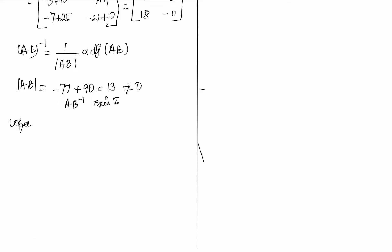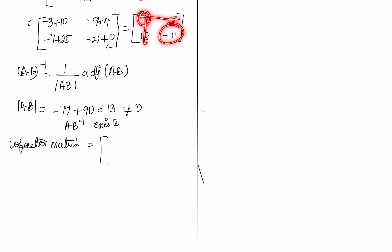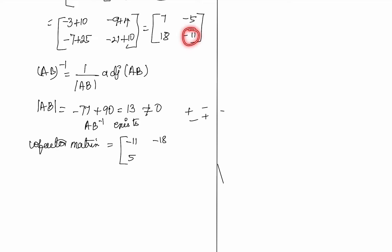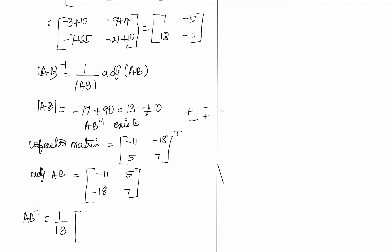Next, adjoint of AB: the co-factor matrix of AB. Using the sign pattern [+, -; -, +], the co-factors give us the adjoint of AB as [-11, 5; -18, 7]. So (AB)⁻¹ equals 1/13 × [-11, 5; -18, 7]. This is equation 1.